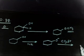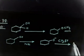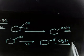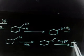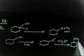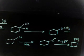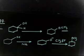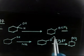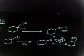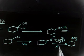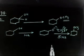Br can act as a good leaving group, so finally you will have OCH3 — the desired product. O⁻ will attack and the Br will leave, so we have an SN2 kind of reaction here. Now let us discuss the next one.